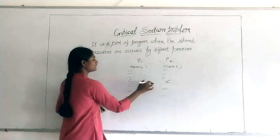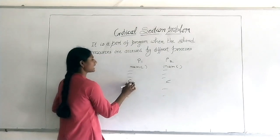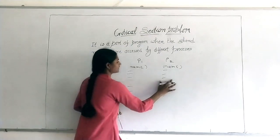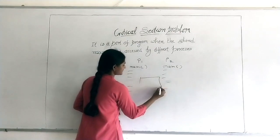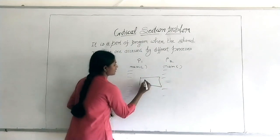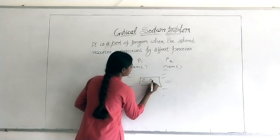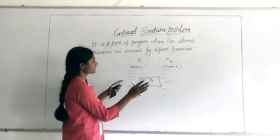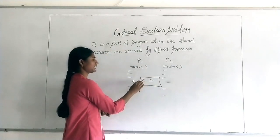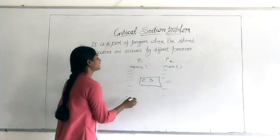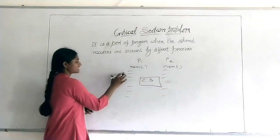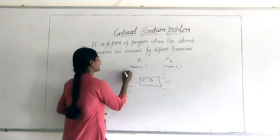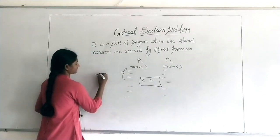These C variables are shared between processes. What we will do is keep this value in a separate section, which is called the critical section, because we are keeping the same shared resources in a separate place. The rest of the instructions are called non-critical sections.